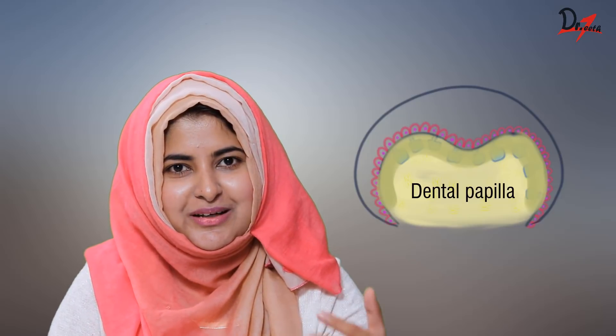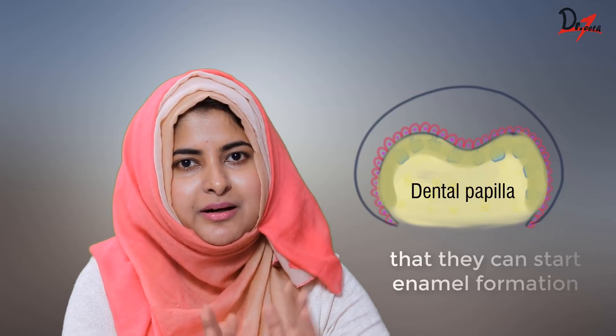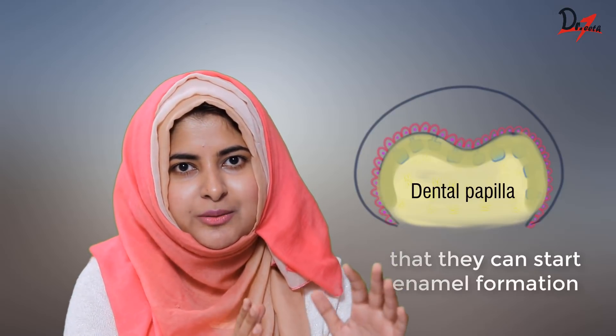So the first layer of dentine will form. And then this dentine will give a signal back to the ameloblast so that they can start enamel formation. So it is a give-and-take relationship. The enamel first gave signal to the dental papilla to form the dentine, and then when the first layer of dentine is formed, it gives the signal to the ameloblast to start.